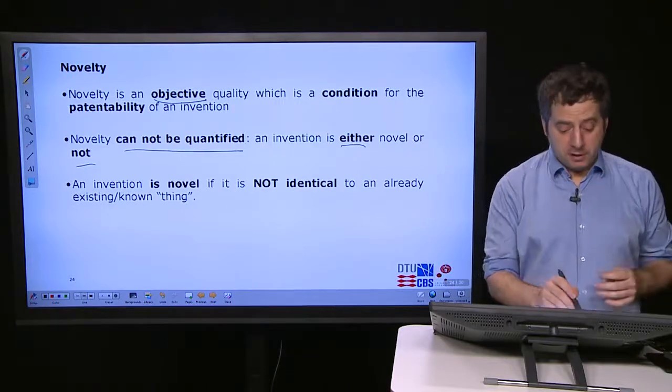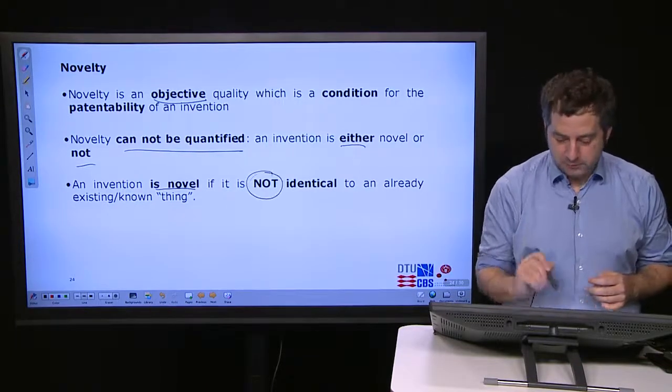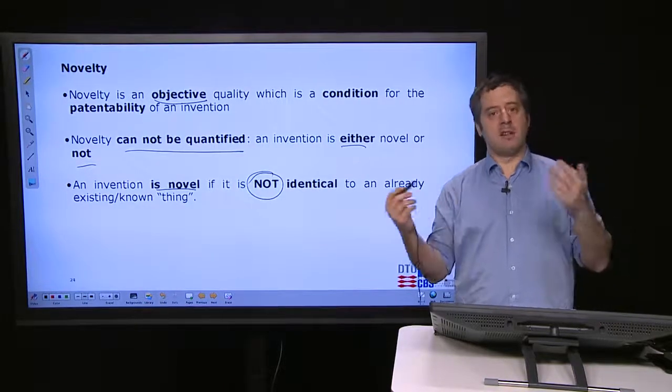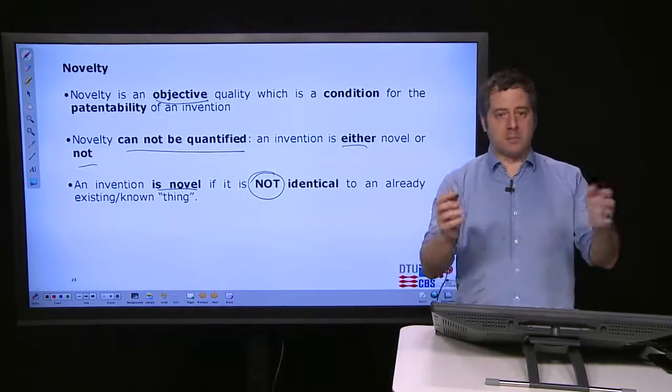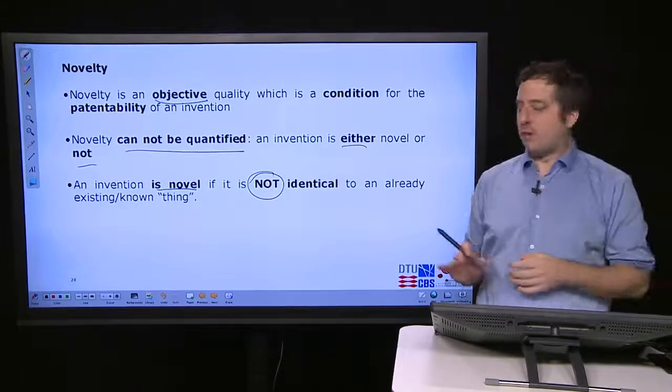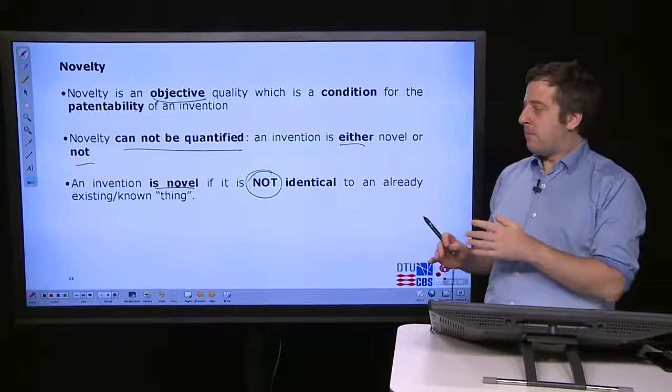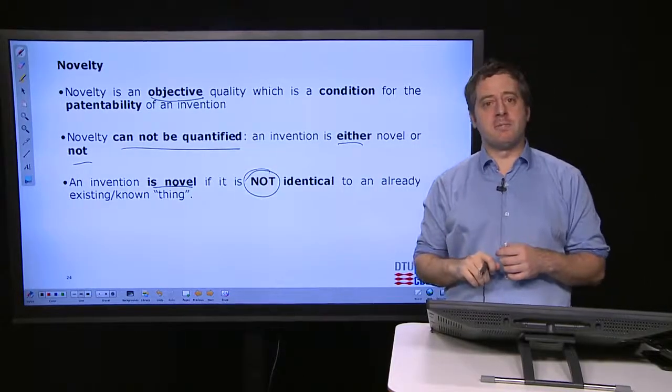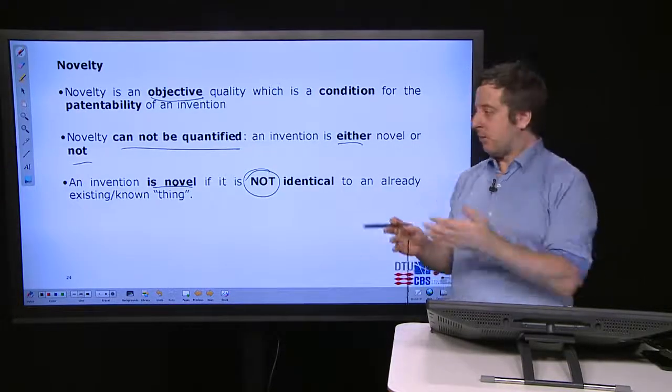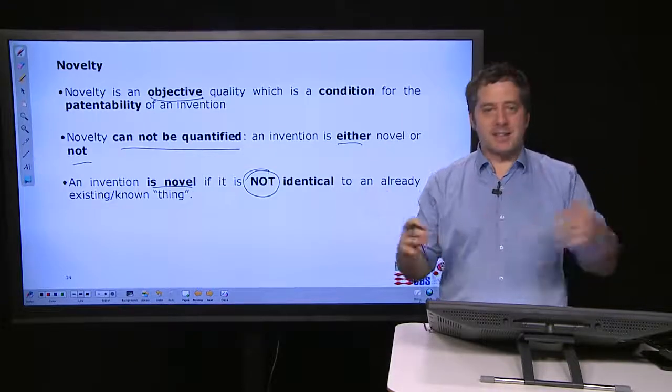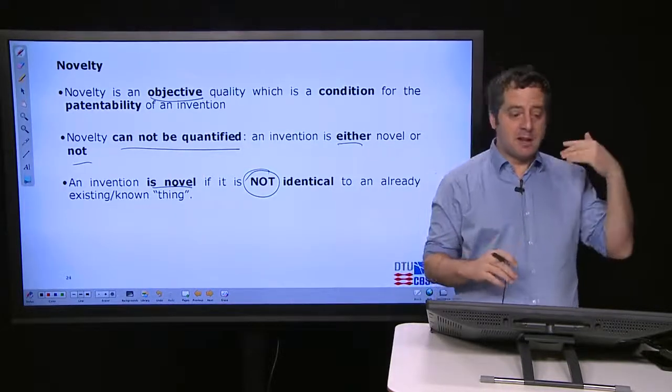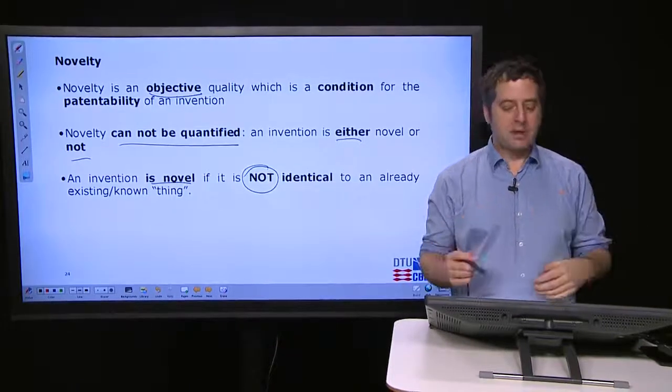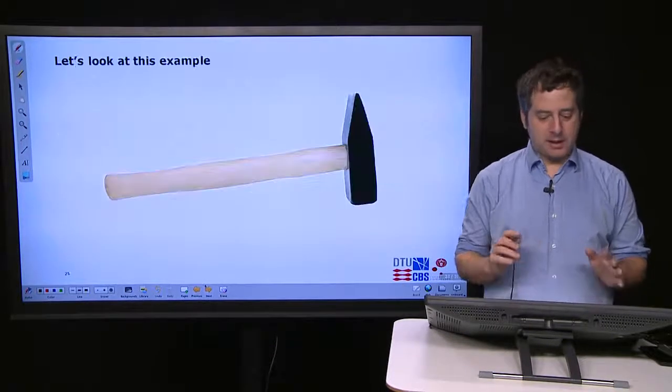Very simply, an invention is novel if it is not identical to an already existing known thing. You change something, it's new. Example: before we do square or rectangular screens. I can make a rectangular screen with a fifth edge on the top. It is not identical to the rectangular so it's a novel design. Whether I can patent it is a different story. But basically novelty shows that as soon as I change something and it is not identical to something else, it is novel.